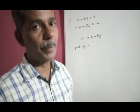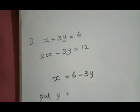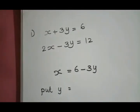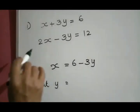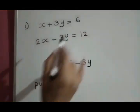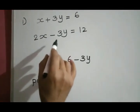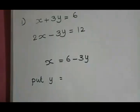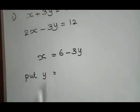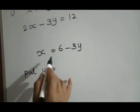Let us solve a pair of linear equations graphically with this example. Consider the two equations: x plus 3y is equal to 6, and 2x minus 3y is equal to 12. For solving it graphically, first draw the graph of the first equation.